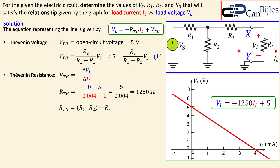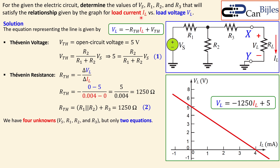We have discussed this in detail in the videos about Thevenin's and Norton's theorem. So this expression — R3 plus R1 parallel R2 — must also equal 1250 or 1.25 kilohms. That is our second equation. We now have two equations but still four unknowns, so we cannot yet develop any additional equations from the given requirements.